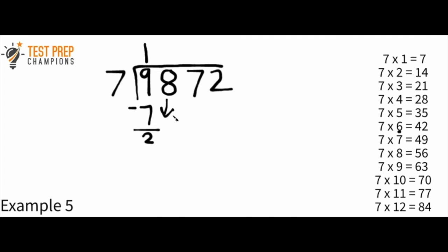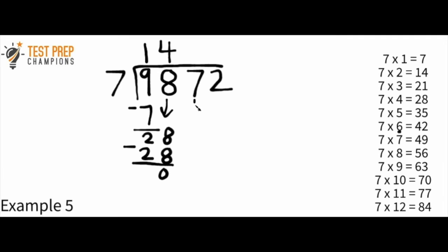Now I pull the 8 down, and I have 28. The next question: how many times does 7 go into 28? 7 goes into 28 four times. So I put a 4 right here. I do 7 times 4 which is 28, and write 28 here. The next step is subtraction: 28 minus 28 is just 0. Now I pull my 7 down, giving me 07. How many times does 7 go into 7? 7 goes into 7 just one time, so I put the 1 right here. 7 times 1 is 7, and 7 minus 7 is 0.